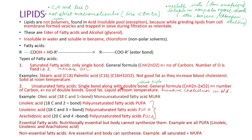Unsaturated fatty acids have both single and double bonds — the unsaturation is in the form of double or triple bonds. The general formula for unsaturated fatty acids is CₙH₂ₙ₋₂ₓO₂, where N is the number of carbons and X is the number of double bonds. These are considered good fats — they are liquid at room temperature and decrease blood cholesterol. An example is oleic acid, an 18-carbon acid with one double bond.